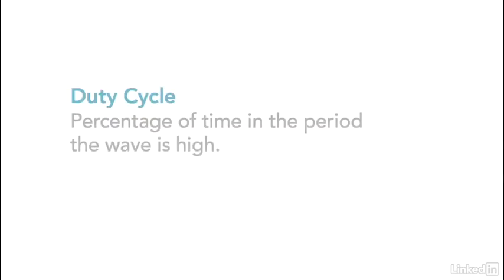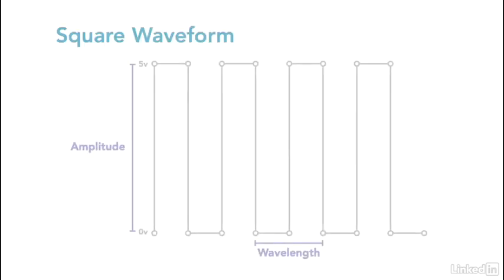An important part of a pulse wave is the duty cycle. Duty cycle is the percentage of time the signal is high in the period of the wave. In this wave, the duty cycle is 50%. This is called a square wave, meaning the signal is high for 50% of the wavelength and low for the other 50%.